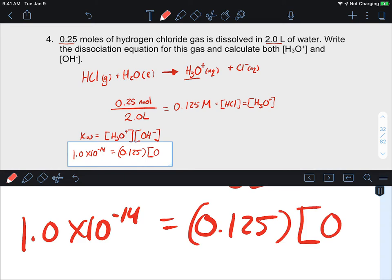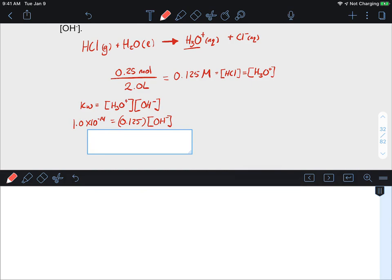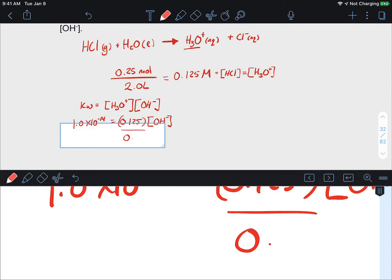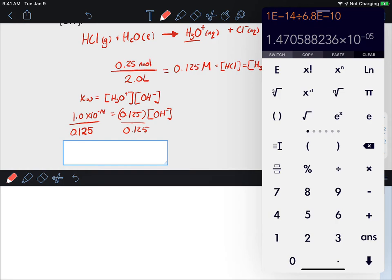Which means we're going to be doing 1.0 times 10 to the negative 14 equals this value, 0.125. A thought experiment to do at this point is you just dissolved hydrochloric acid. Do you expect a high concentration or a low concentration of hydroxide? Hopefully if you're playing along at home, you're going to be expecting a low concentration of hydroxide because you've just created an acidic solution.